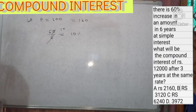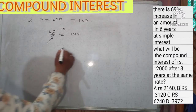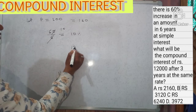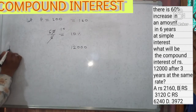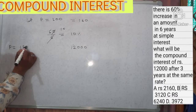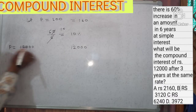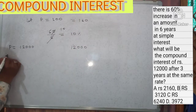Now the question asks: what will be the compound interest of Rs 12,000? So the principle is 12,000 and the rate of interest is 10 percent.